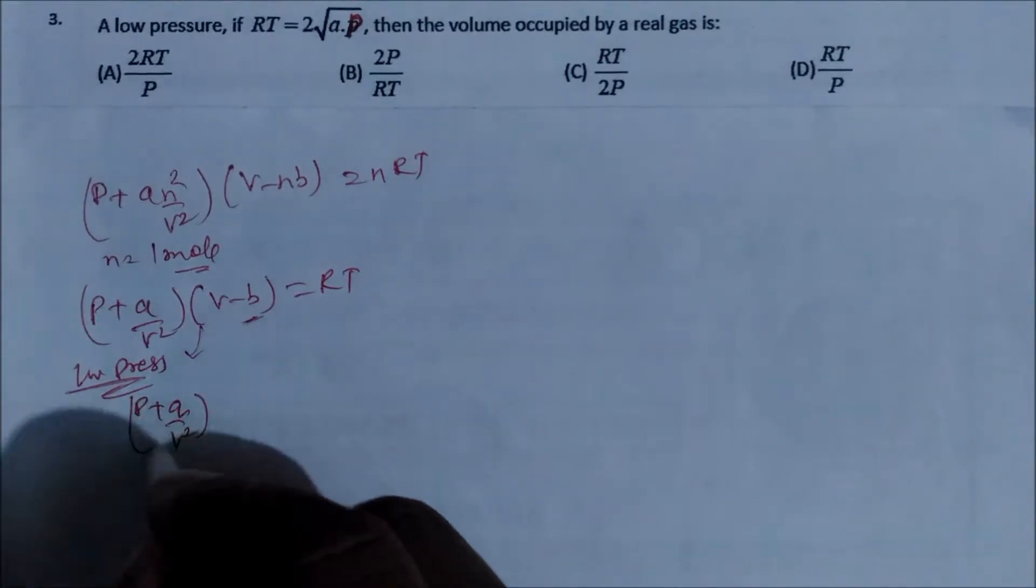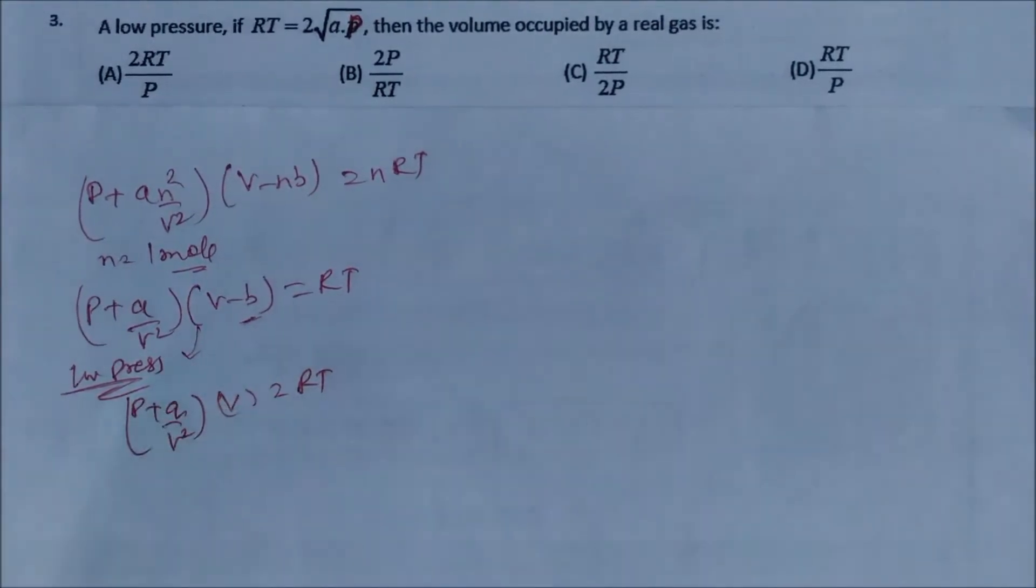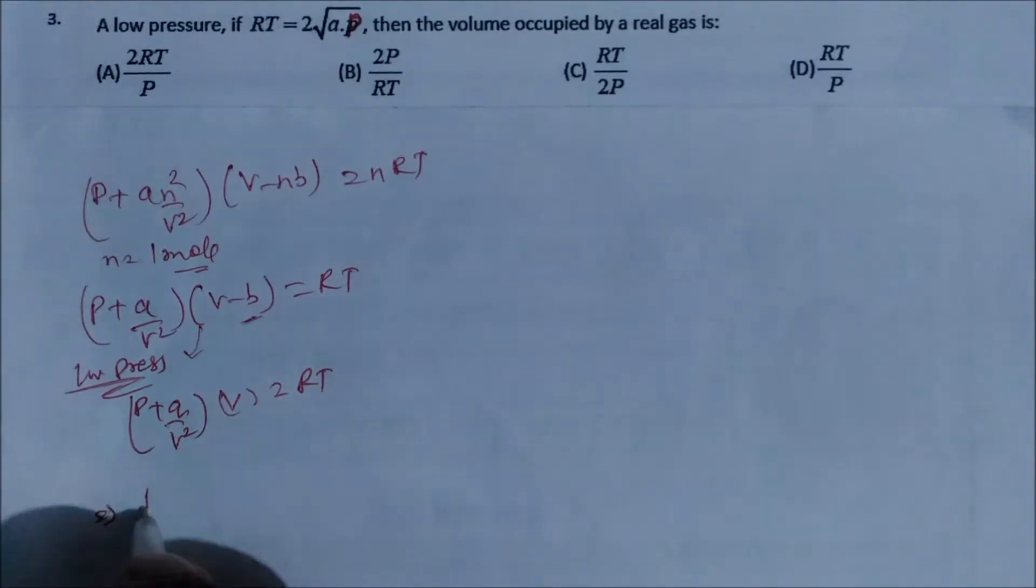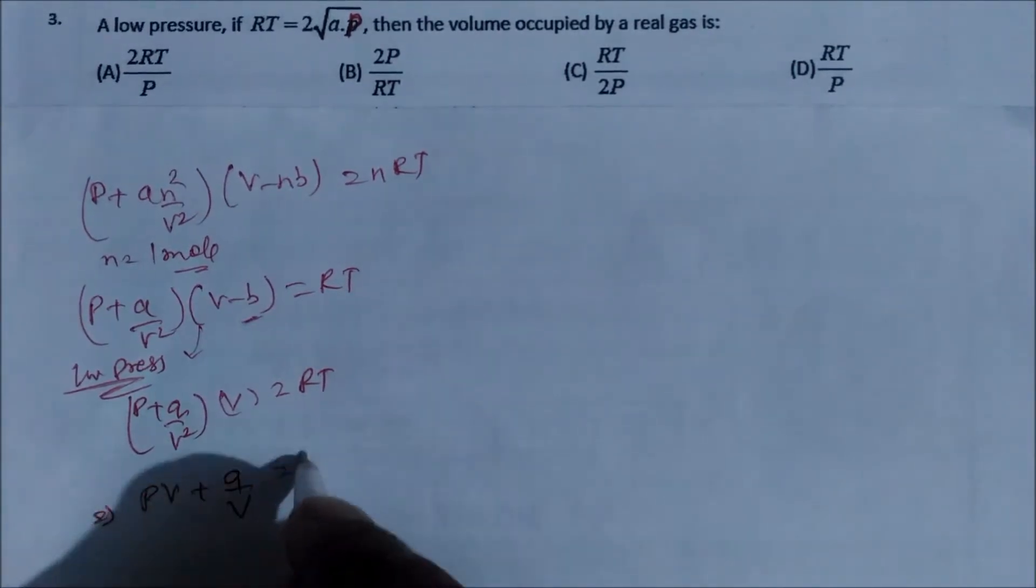This equation is going on, so we can multiply here. So if you multiply P into capital V, and plus a divided by V equal to RT, these equations.